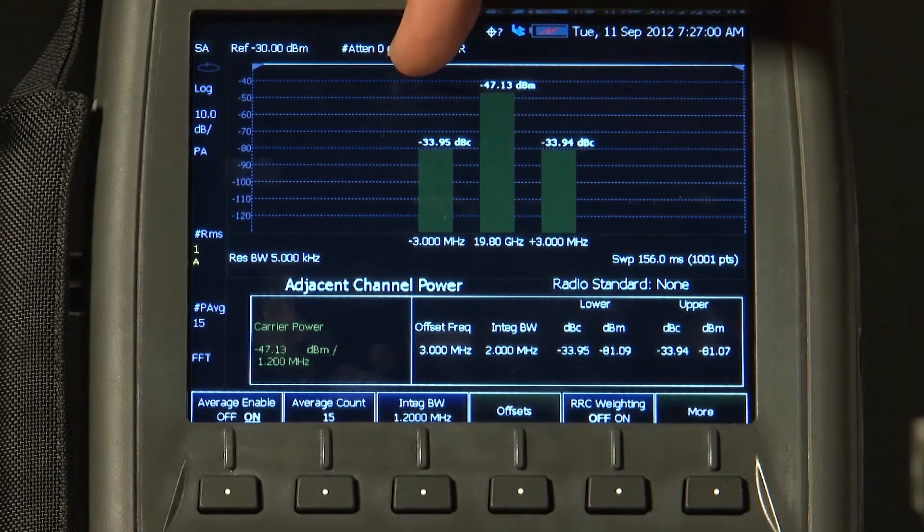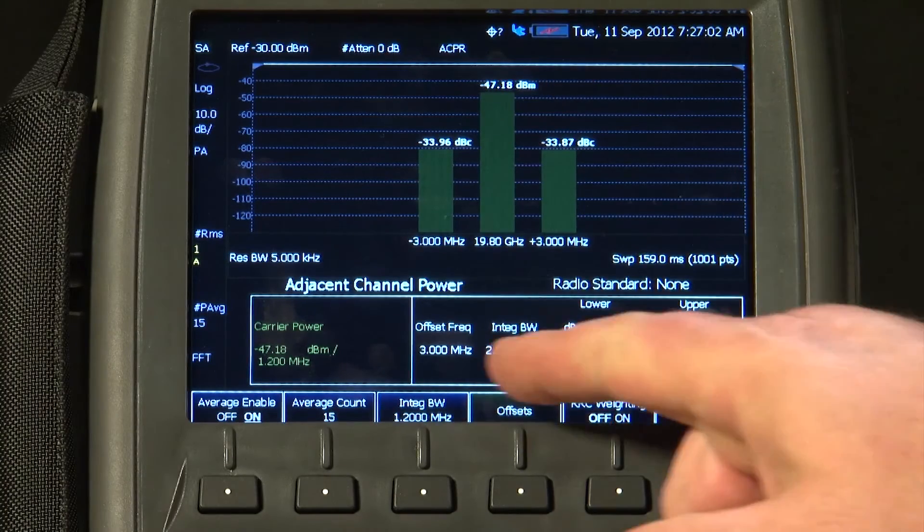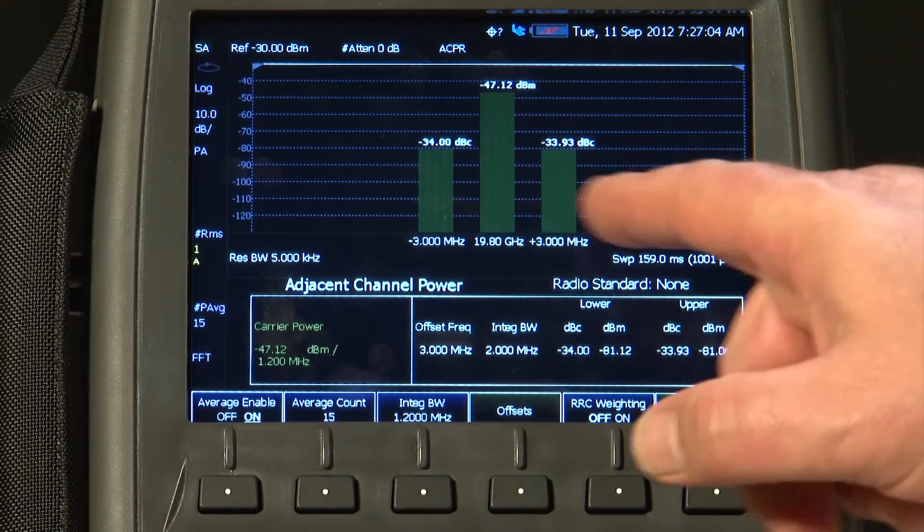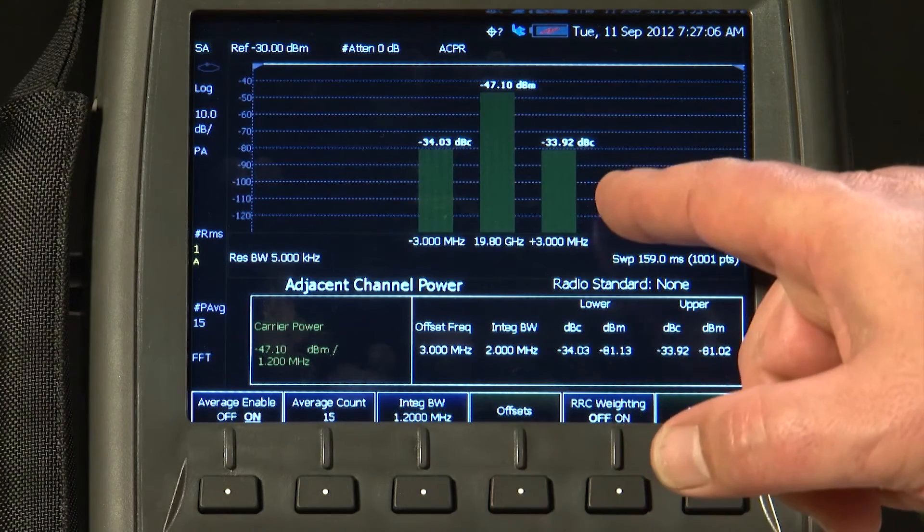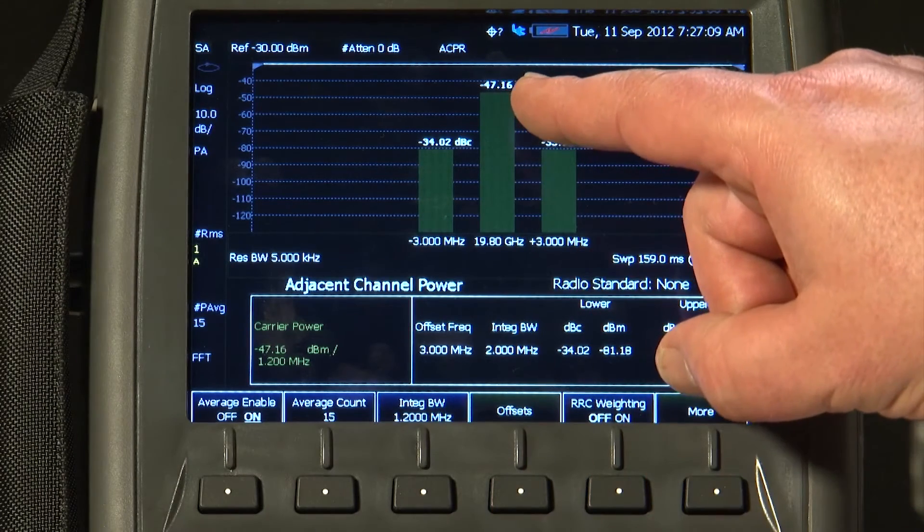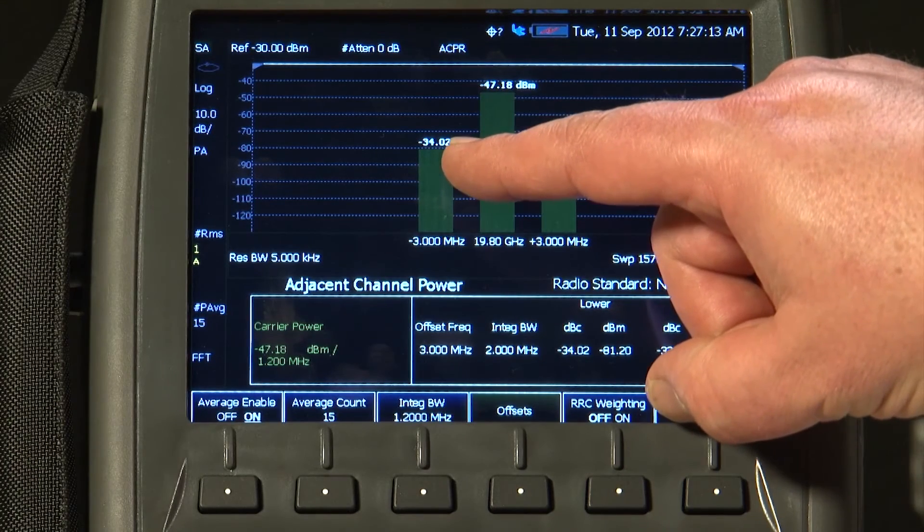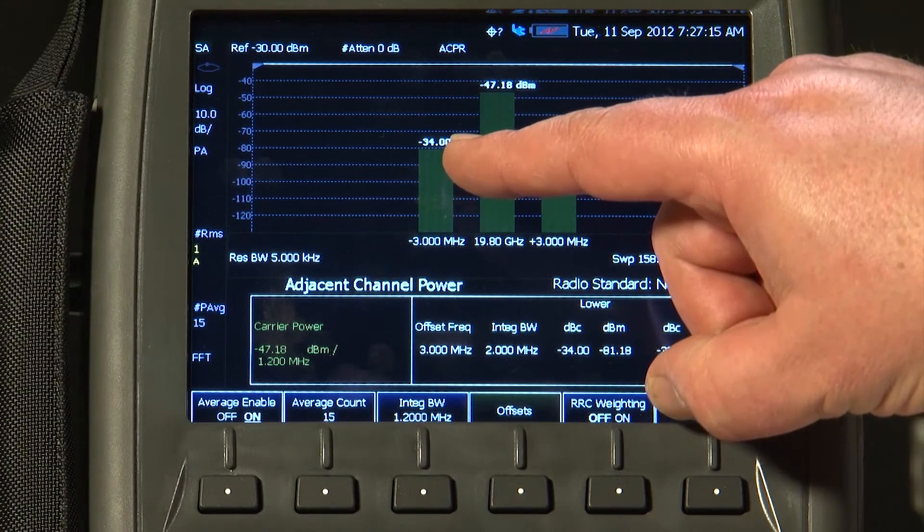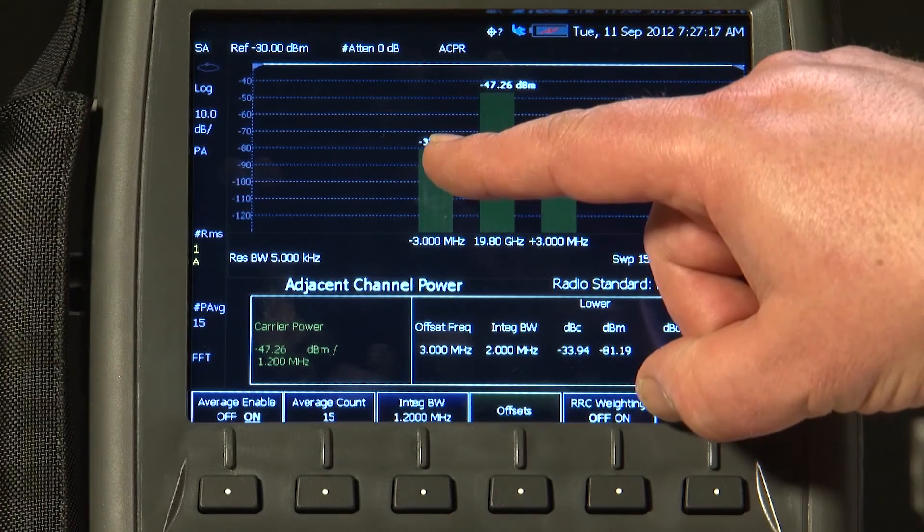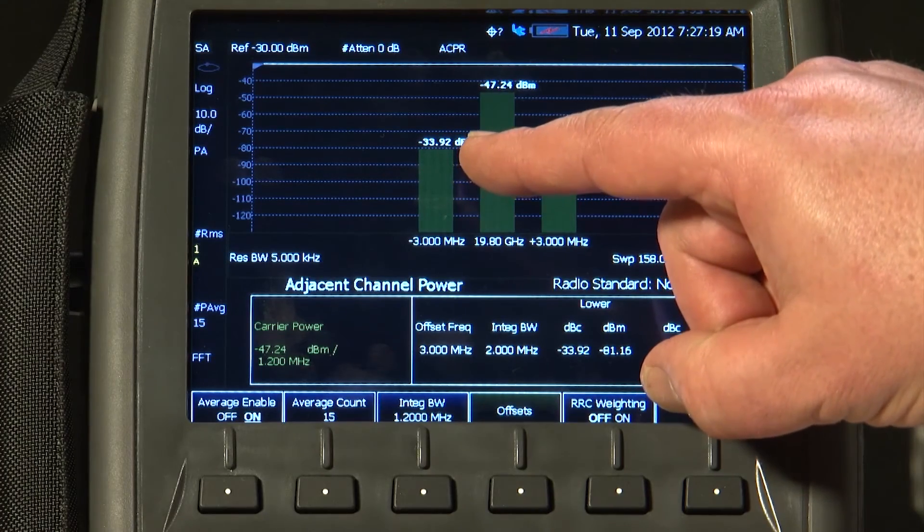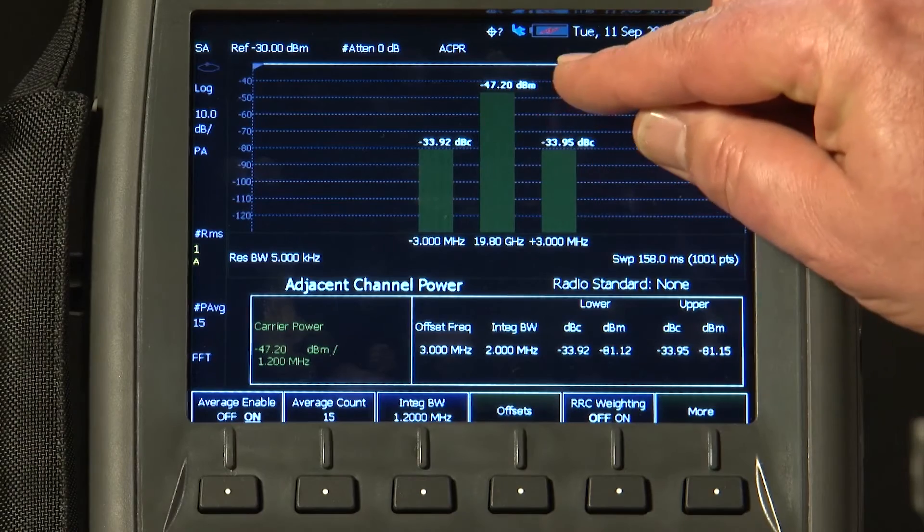signal is leaking into the adjacent channels, we can set here the offset frequency and the integration bandwidth for both the lower and the upper channel, and it will automatically measure the power within the main channel. You can see here that the power within the next adjacent channel at a lower frequency is minus 33.9 dBc, in other words, dBs below the carrier.